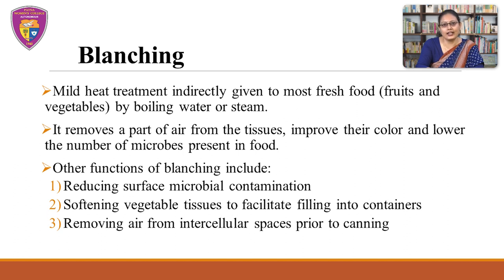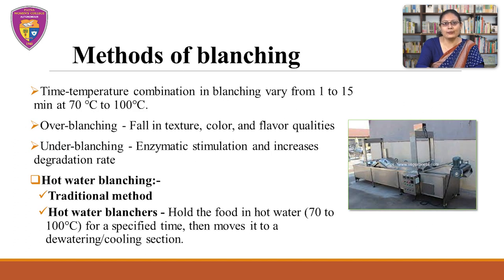It is used along with canning, freezing and dehydration. Blanching is useful and its functions include reducing surface microbial contamination of the food, softening of vegetable tissues to facilitate filling into containers, and removing air from intercellular spaces prior to canning. Generally, time-temperature combination in blanching vary from 1 to 15 minutes at 70 to 100 degrees Celsius. Over-blanching causes a fall in texture, color and flavor qualities, whereas under-blanching increases the degradation rate.